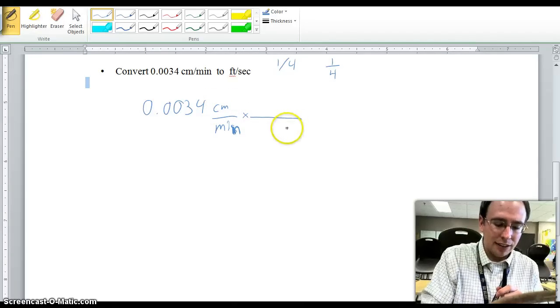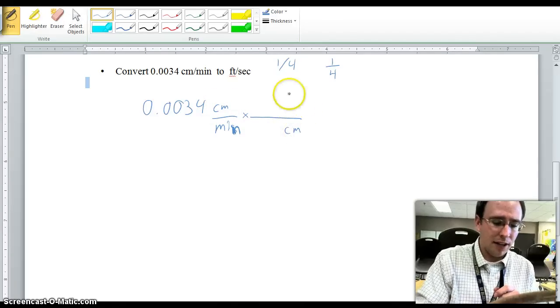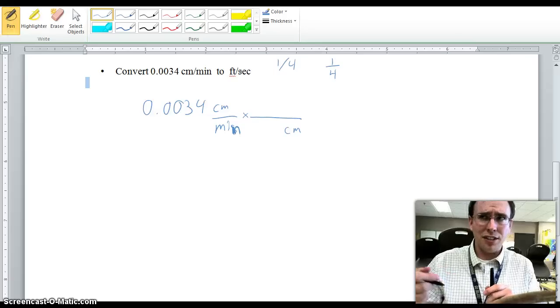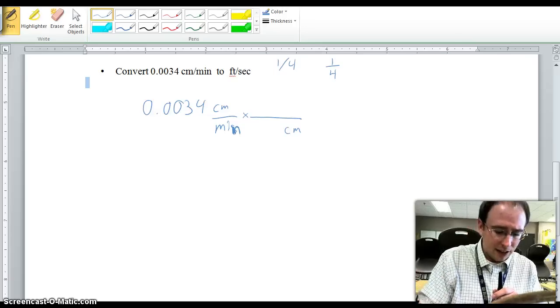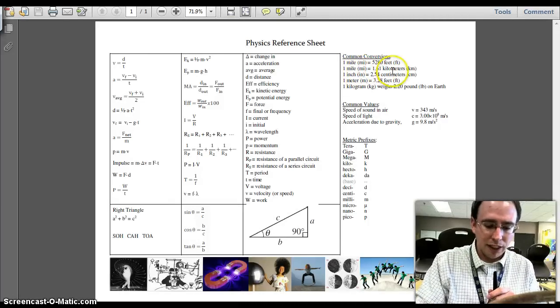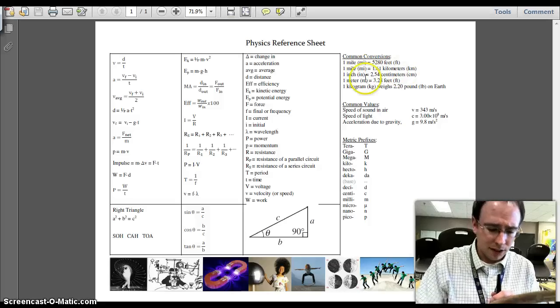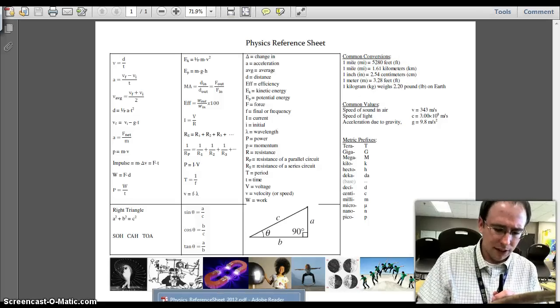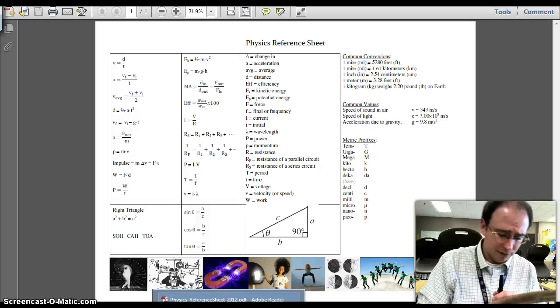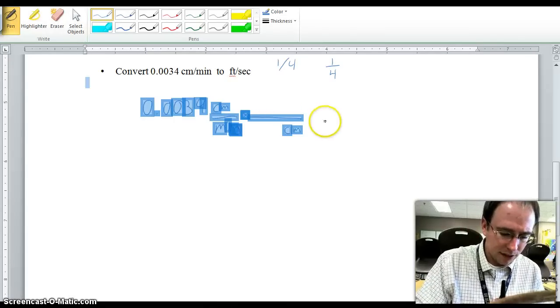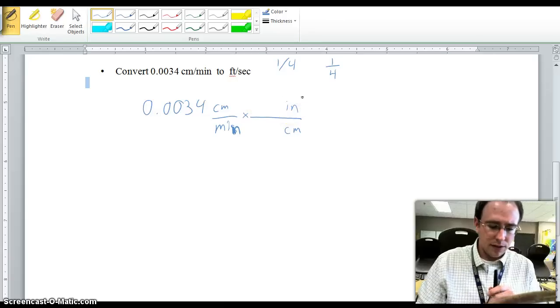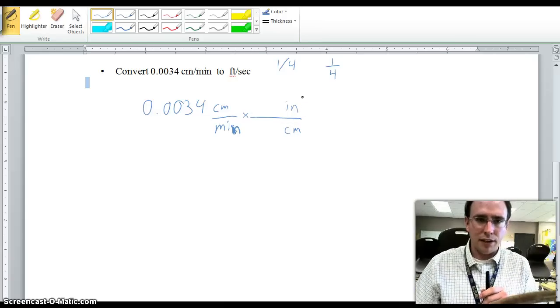So, I want centimeters to cancel, so it has to go on bottom, and I want to get to feet. Well, if I don't know how many centimeters there are in one foot off the top of my head, I can actually use something else that will help me get there. And that could come from my reference sheet. There's a couple of things in here. I can use the relationship between inches and centimeters, and then I can get to feet from inches. Or I can use the feet to meters and get to centimeters that way.